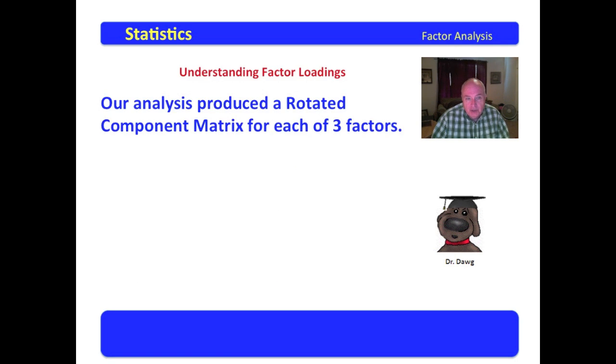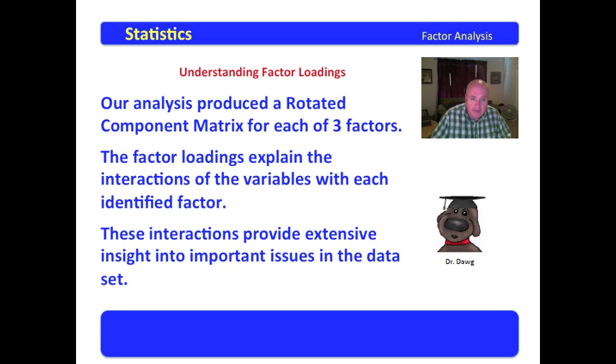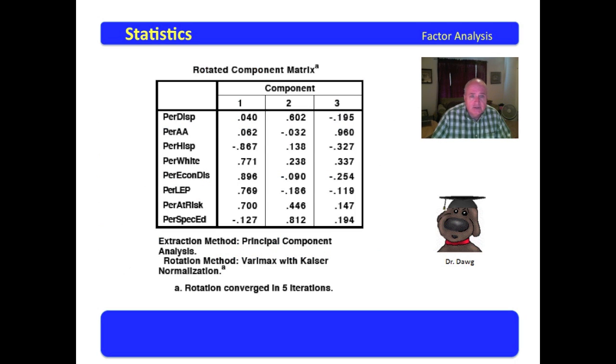Our analysis produced a rotated component matrix for each of three factors. The factor loadings explain the interaction of the variables with each identified factor. You will recall that we had three factors with eigenvalue values above 1.0, and therefore they were deemed important. These loadings speak to each of those three factors and provide extensive insight into the important issues in the data set.